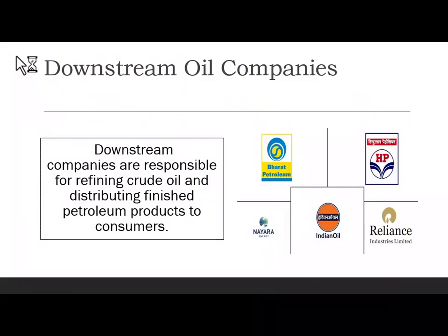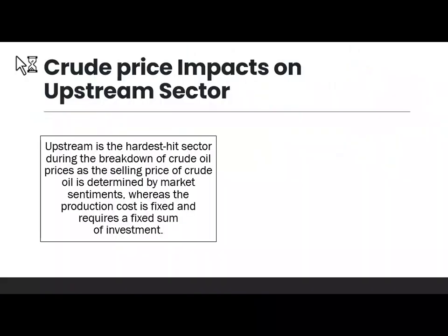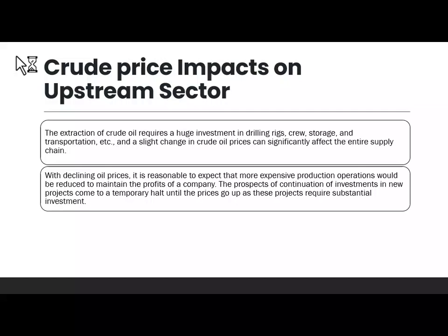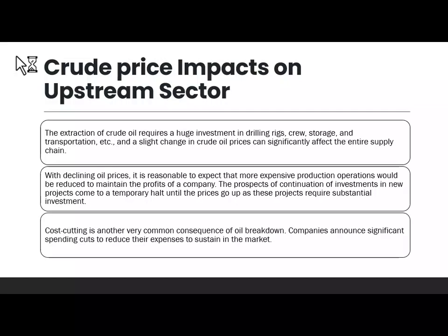When crude prices fall, companies announce significant spending cuts — shut down exploration facilities, reduce manpower — to bring down costs. For the downstream sector, when crude prices fall it actually benefits them because their raw material (feedstock) becomes cheaper. They get cheap crude and convert it into petrochemicals, earning better margins. So upstream and downstream have opposite reactions to crude price movements.